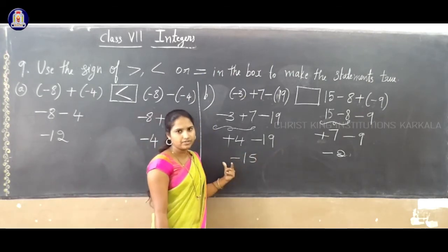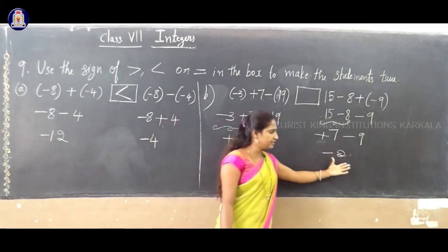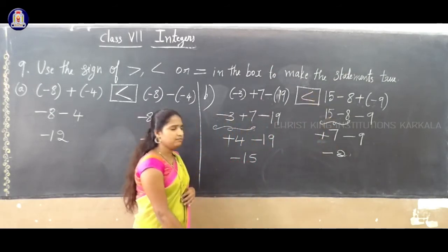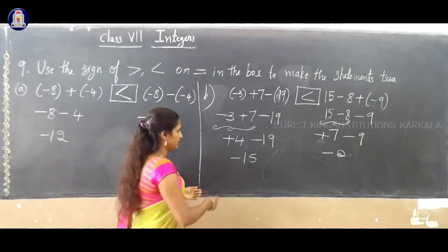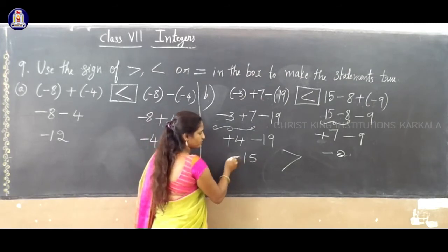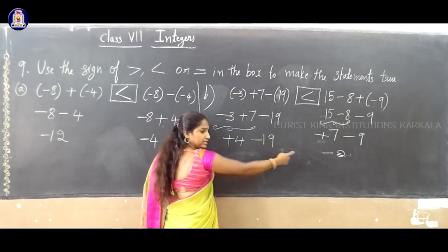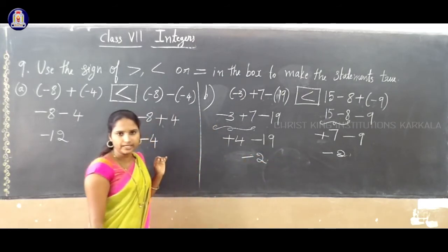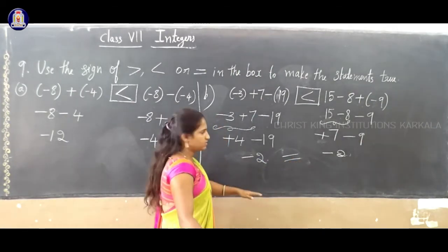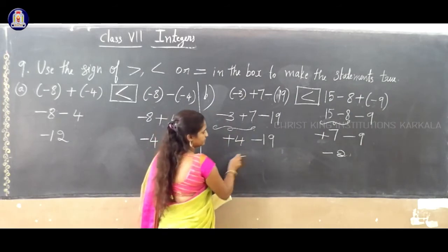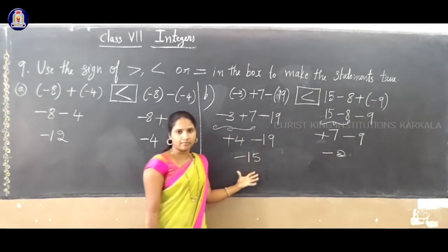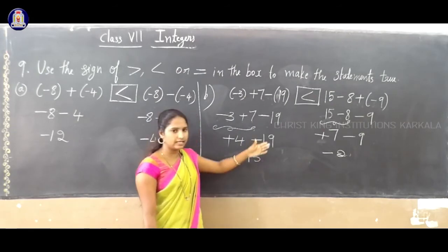Comparing LHS minus 15 and RHS minus 2: minus 2 is greater than minus 15. So, LHS is lesser than RHS. We use the less-than sign. We can also say minus 15 is less than minus 2.